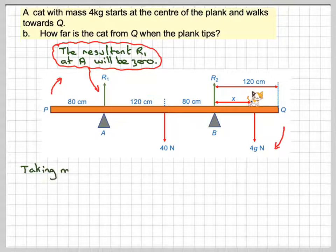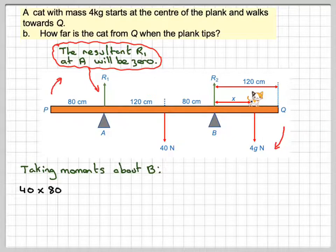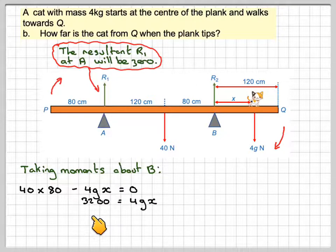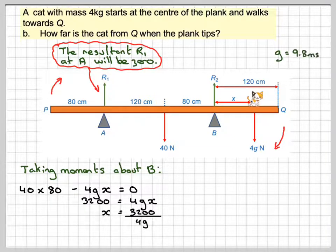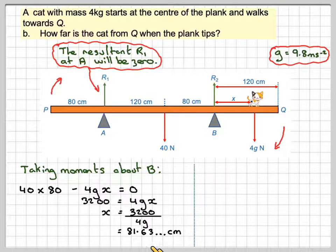If we now take moments about B, we're going to have 40 times 80 minus 4G, that's the force here, 4G because we've got a mass of 4 kilograms, times the distance X, is going to be equal to zero. So that means 3200 is equal to 4GX, and therefore X will be 3200 divided by 4G, and we know that G is taken to be 9.8, so that's going to give me 81.63 centimetres.